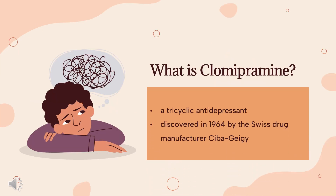What is Clomipramine? Clomipramine, sold under the brand name Anafranil among others, is a tricyclic antidepressant. It is used for the treatment of obsessive-compulsive disorder, panic disorder, major depressive disorder, and chronic pain. It may increase the risk of suicide in those under the age of 25. It is primarily taken by mouth. Clomipramine was discovered in 1964 by the Swiss drug manufacturer Ciba-Geigy. It is on the World Health Organization's list of essential medicines and is available as a generic medication.